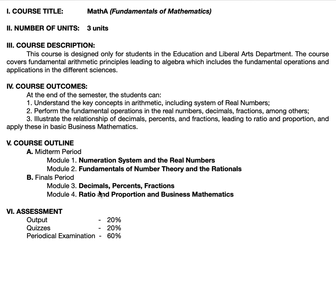After all two midterm modules are done, you'll be given a problem set — a worksheet to answer by hand, unlike the quizzes which have multiple choice. The output is 20% — it's a single attempt, you cannot retake it. Examinations are 60%, for a total of 100%. That's your grades for Math A.